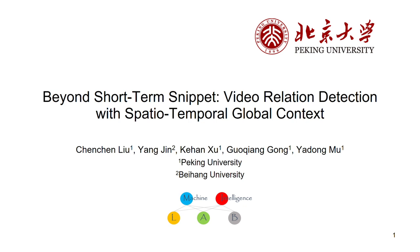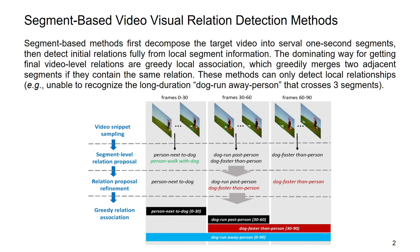This is about video relation detection. Previous segment-based methods first decompose the target video into several one-second segments, then detect initial relations fully from local segment information. The methods greedily merge two adjacent segments if they contain the same relation to get final video-level relations.